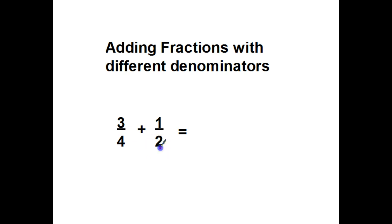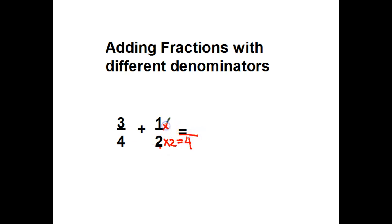If you notice, if you take a look at the smaller denominator, I have a 2 here. I can change this 2 to a 4 by multiplying times 2. So 2 times 2 equals 4. And if I take the bottom of the fraction times 2 — the denominator times 2 — I have to take the numerator times 2, top times 2. So now what I've really done is changed 1 half to 2 fourths.